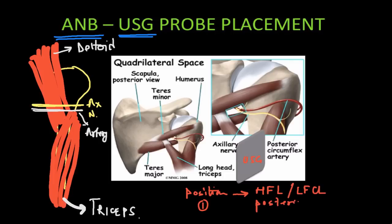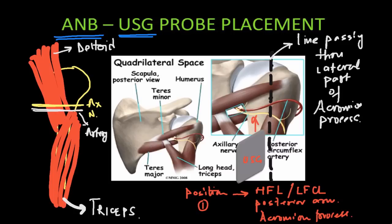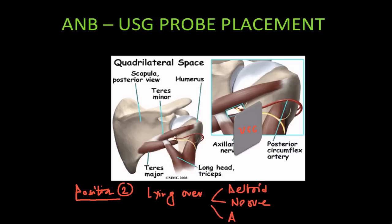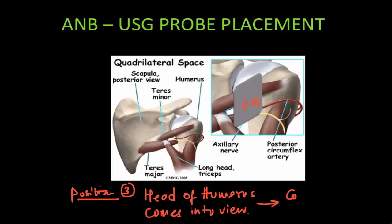We place the ultrasound probe first in position one on the posterior arm along a vertical line that passes through the acromion process — at this point we can see the fibers of the tricep. Next we move the ultrasound probe vertically cranially along this line to position two, which lies directly above the end of the tricep muscle fibers, the beginning of the deltoid fibers, and the axillary nerve and artery accompanying it, with the humerus bone directly below. Moving the probe into position three, you will be able to see the curved head of the humerus coming into view, confirming the anatomy.